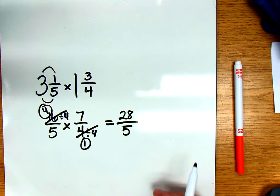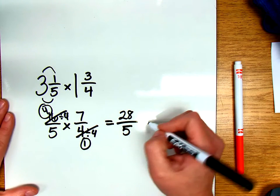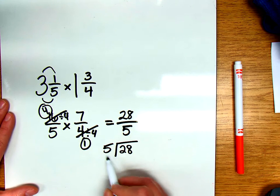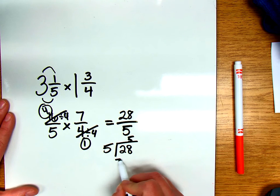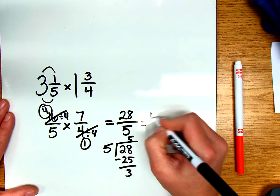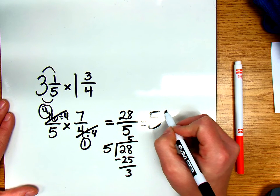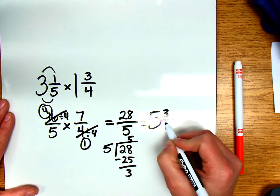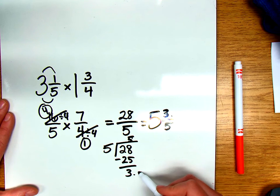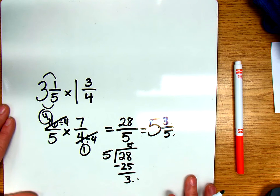Now we have another added step where we just need to make this improper fraction into a mixed number, and we do this by dividing 28 divided by 5. 5 can go into 28 five whole times, subtract 25. So we would say that this is 5 and 3/5 because we went in 5 whole times, we get a remainder of 3, and we're dividing by 5.